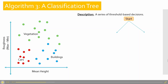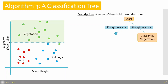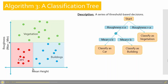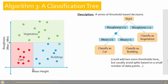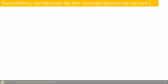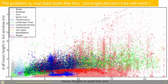The next algorithm is a classification tree. You start with your data, take a feature — say roughness — and make a decision: is it bigger or smaller than threshold A? Things bigger than A get classified as vegetation. Then you take another feature, split the data again, and get cars and buildings classifications. There may be a point that's misclassified, but we just want to get the majority right. The problem is that real data looks much messier than this simple example.